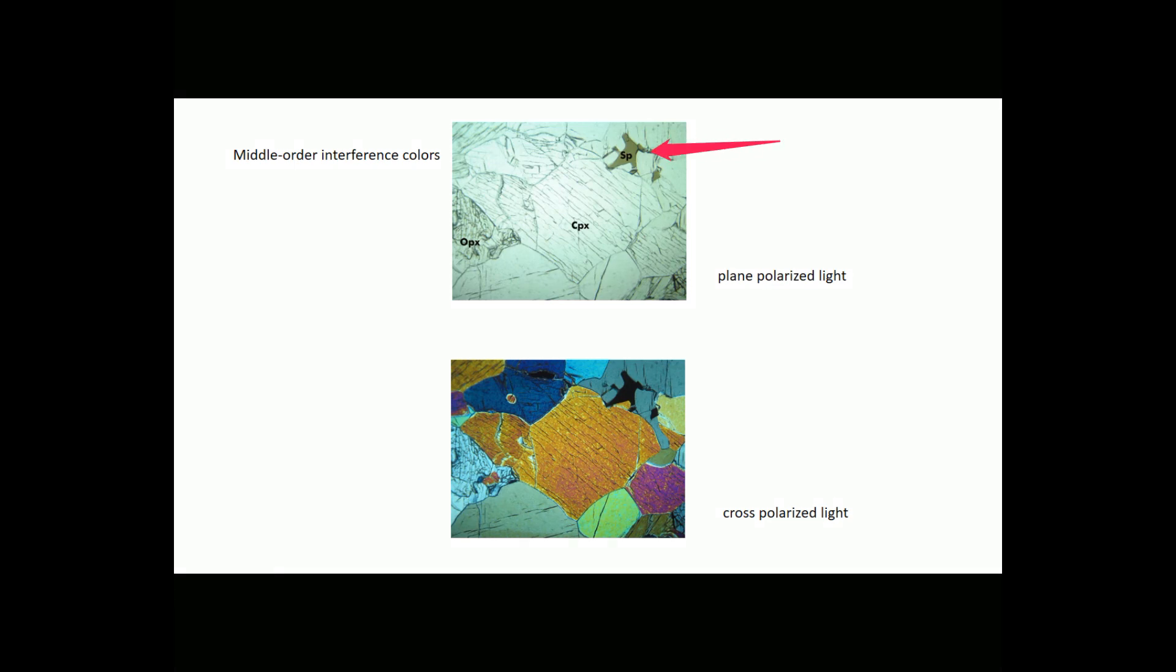Notice also in the top view, the plain polarized view, we can see a green grain of spinel. Spinel is an isotropic mineral, so it remains black under cross polarized light.